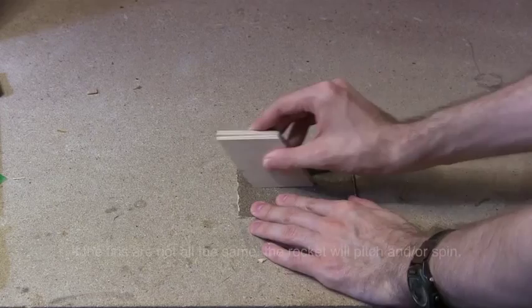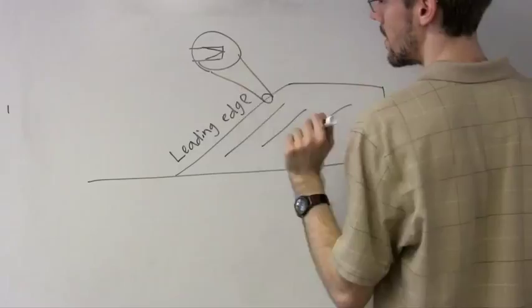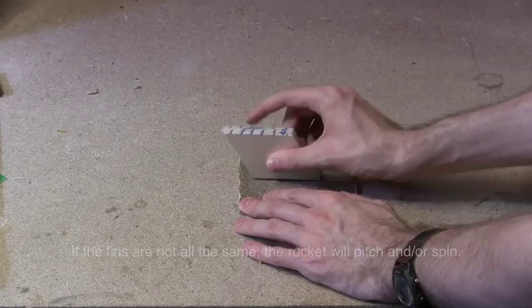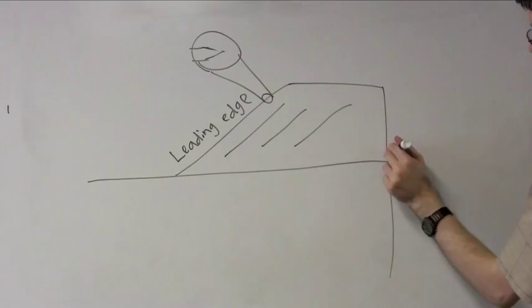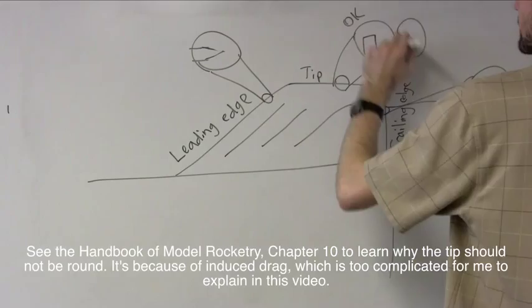Once we've cut out our fins, we can hold them all together and sand them all down to be the same. I like to sand the leading and trailing edges of my fins to give them a more aerodynamic shape. The tip of the fin should either be left square or sanded sharp. The root should not be sanded at all so that it stays rough and has plenty of surface area for the glue to adhere to.